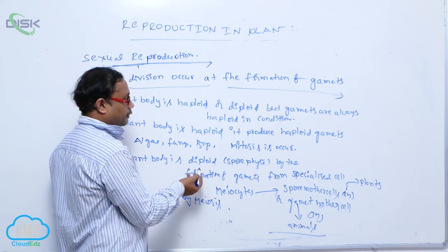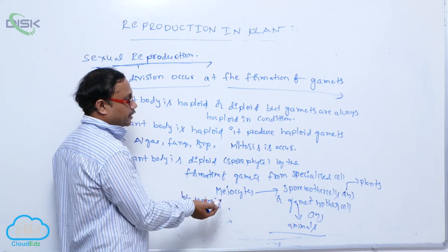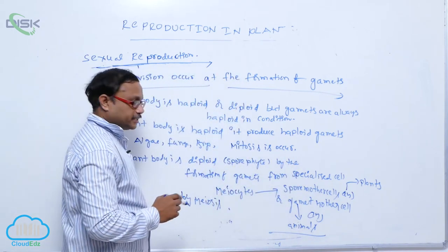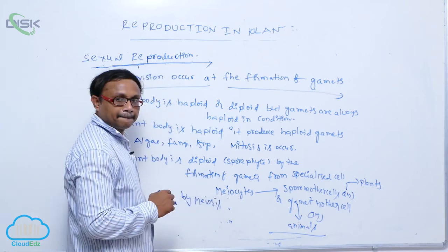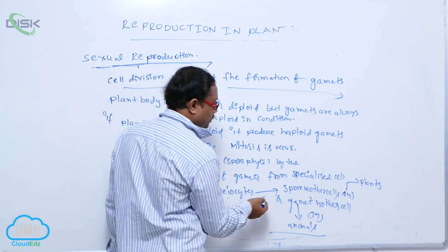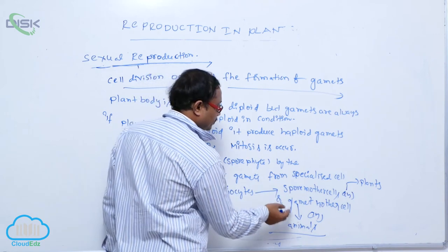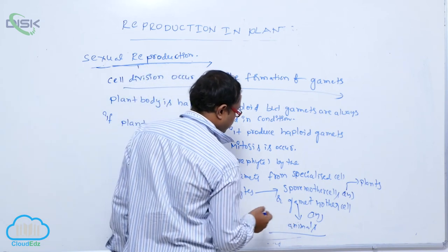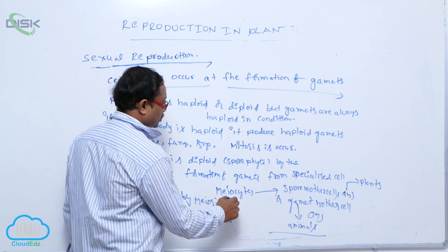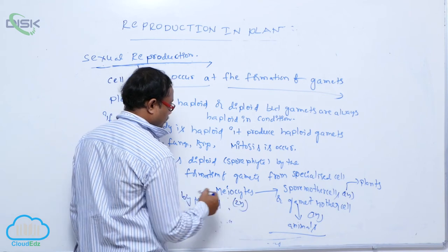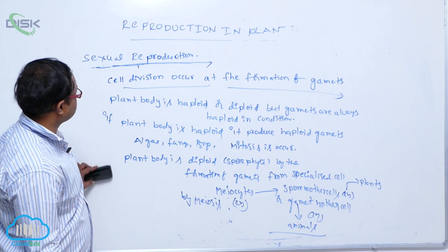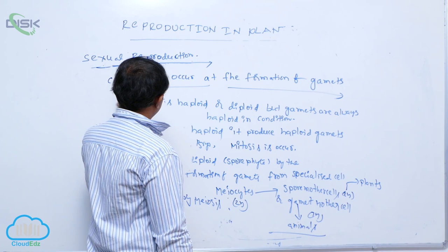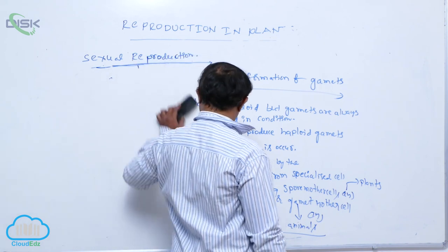If the plant body is diploid, it is a sporophyte, and the formation of gametes occurs from specialized cells. These specialized cells are known as meiocytes, also called spore mother cells or gamete mother cells. Spore mother cells are present in plants; gamete mother cells are present in animals. Meiocytes are always diploid cells. So that is cell division occurring at the time of gametogenesis.